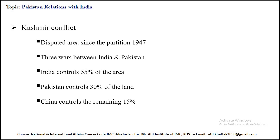It is a dispute over the region that escalated into three wars between Pakistan and India and several other armed skirmishes. India controls approximately 55 percent of the land in this region, including Jammu and Kashmir valley, most of Ladakh, the Siachen Glacier, and 70 percent of its population. Pakistan controls approximately 30 percent of the land area, including Azad Kashmir and Gilgit-Baltistan.